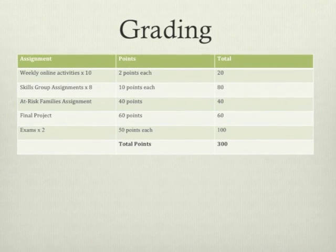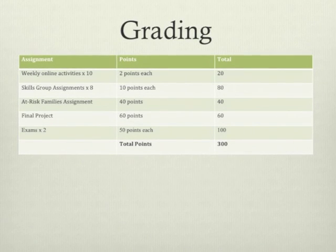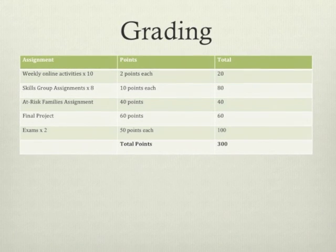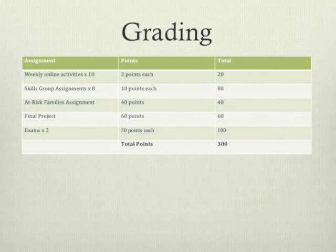The at-risk families assignment is a paper worth 40 points. The final project is an in-class 15-minute recorded interview that you will transcribe later. You will also complete observation and client feedback sheets and write a self-evaluation.